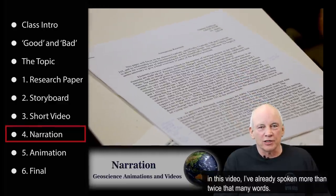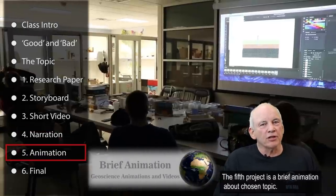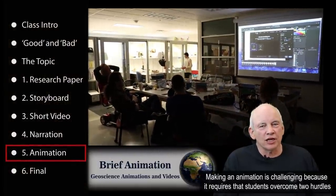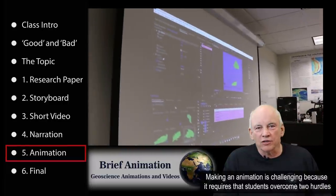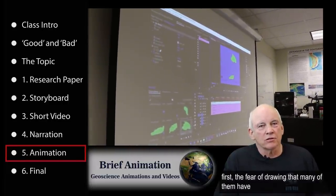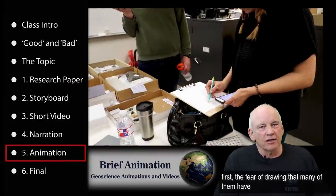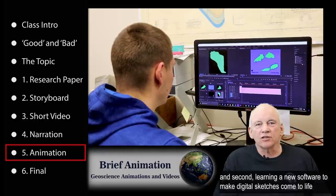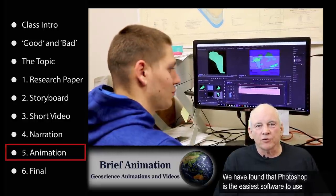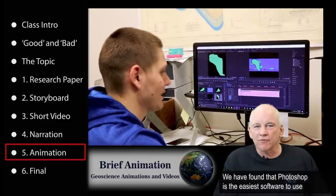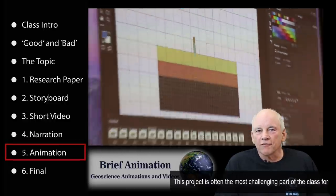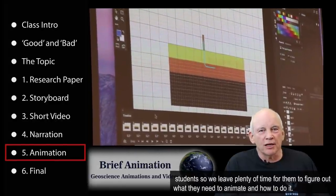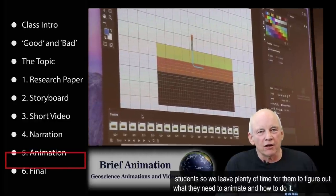The fifth project is a brief animation about the chosen topic. Making an animation is challenging because it requires that students overcome two hurdles: first, the fear of drawing that many of them have, and second, learning new software to make digital sketches come to life. We have found that Photoshop is the easiest software for them to use. This project is often the most challenging part of the class for the students, so we leave plenty of time for them to figure out what they need to animate and how to do it.